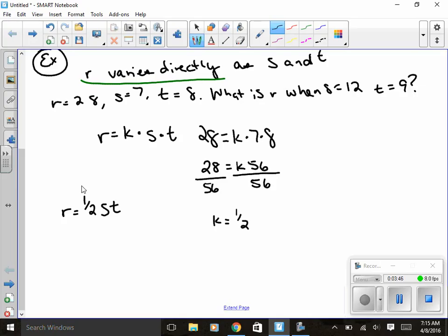So from this, I'm going to go ahead and find R and plug in my 12 and 9. So I have a half times 12 times 9. So I really have 6 times 9, which gives me 54. So the key here is R varies directly. So that tells you what variable represents the Z in our joint variation formula.